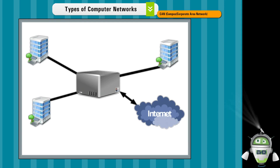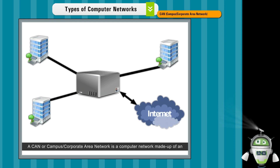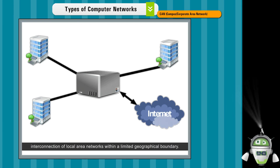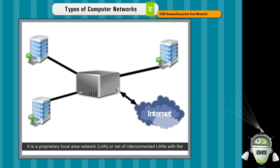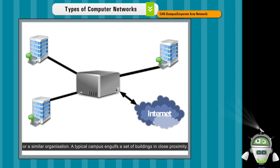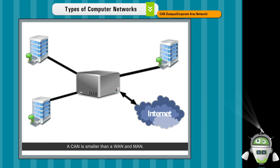CAN – Campus or Corporate Area Network. A CAN or Campus or Corporate Area Network is a computer network made up of an interconnection of local area networks within a limited geographical boundary. It is a proprietary local area network or set of interconnected LANs with the prime purpose of serving a corporation, government agency, university, or a similar organization. A typical campus engulfs a set of buildings in close proximity. A CAN is smaller than a WAN and MAN.